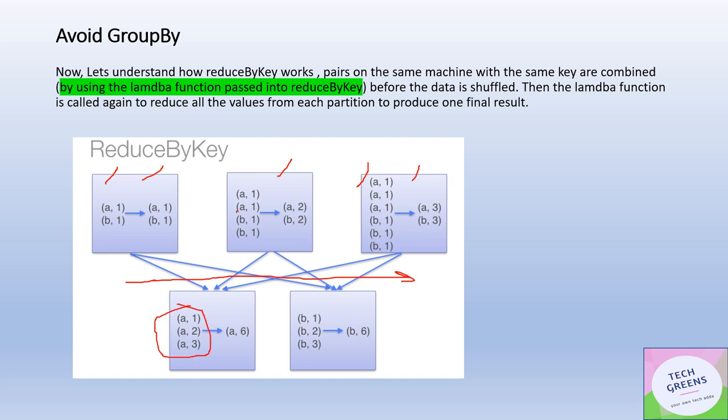If you see now, all the keys - the same key has come to the same partition. A has come on this partition and B has come onto this partition. Now the further reduce - the lambda function of reduce is again applied to the summation of all the values and eventually I get key-value pair for that particular word and the count of that particular word.